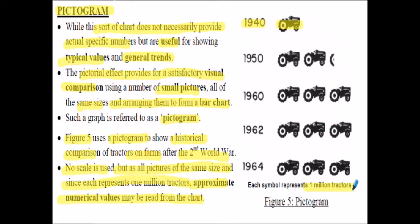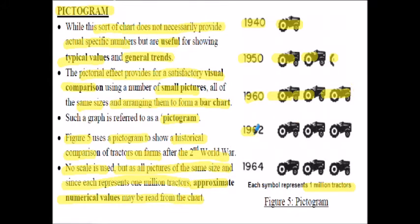In 1940 one tractor is depicted, so we can say there were a million tractors on the land. By 1950 we have two tractors and part of a rear wheel - over two million tractors were used, but whether it's two million two hundred thousand or two million one hundred thousand we can't be sure. In 1960 it looks like nearly three million. In 1962 we have three full tractors so three million. So you can see the pictogram gives you a general perspective on quantities without being specific.